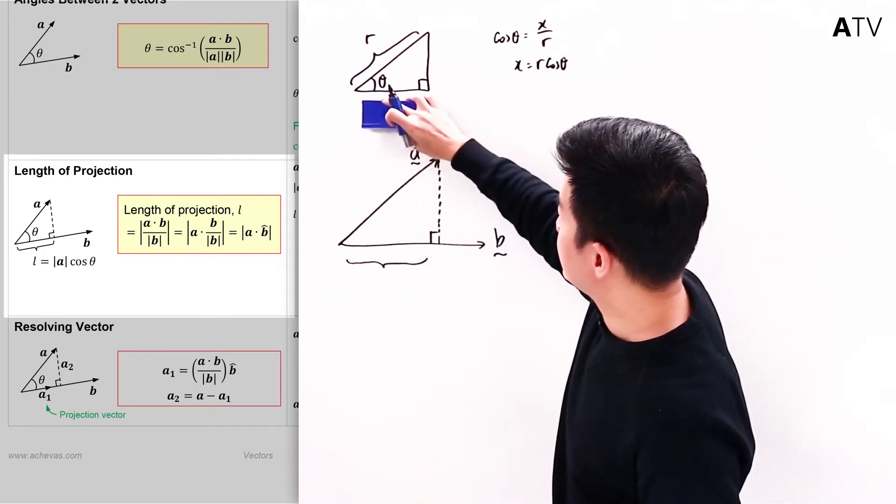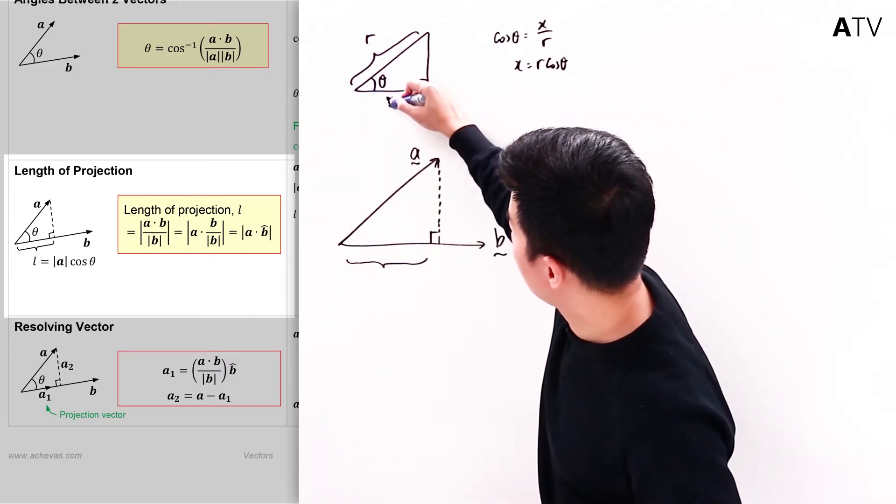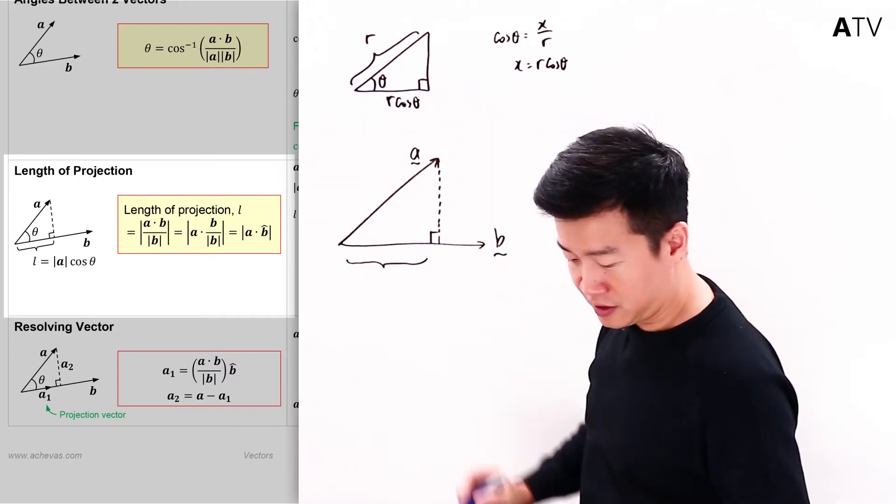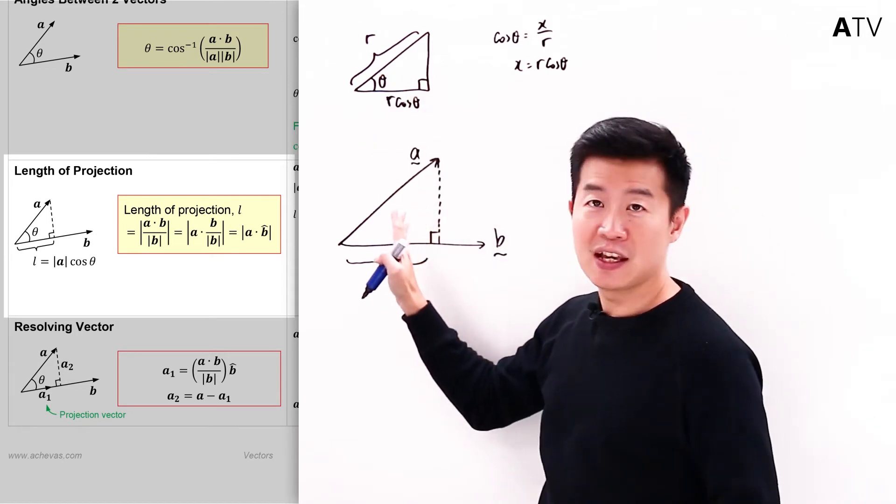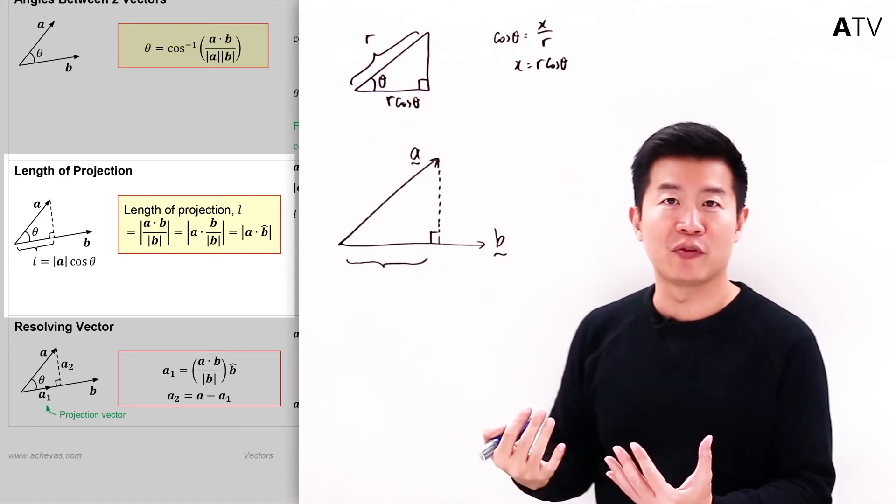So if I can see this portion here as R cosine theta, I'm going to try to apply this here. And hopefully that will help me to do a little bit of visualization.